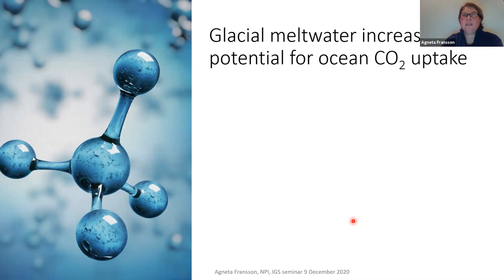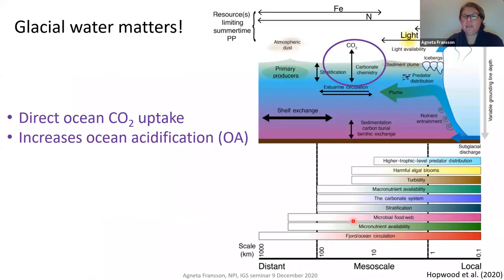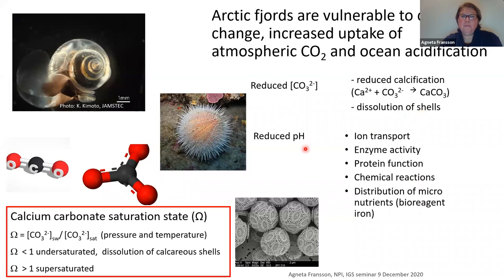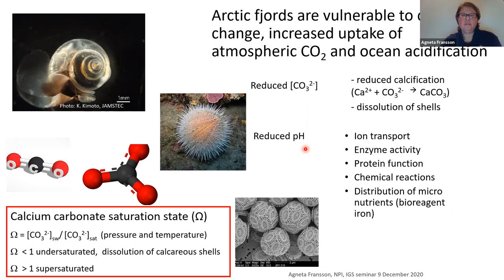To summarize these processes: glacier meltwater increases the potential for ocean CO2 uptake, which also increases ocean acidification. Arctic fjords are vulnerable to climate change and to increased uptake of atmospheric CO2. With reduced carbonate ions you will have reduced calcification and dissolution of shells. With reduced pH you will also have changes in ion transport in marine organisms, enzyme activity, protein function, chemical reactions, and distribution of micronutrients such as iron, which are important for organisms.